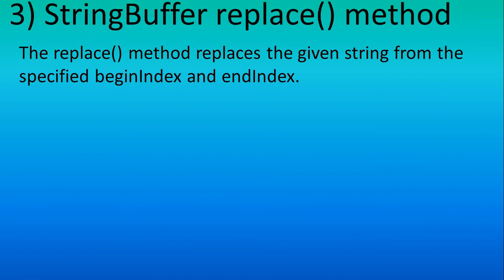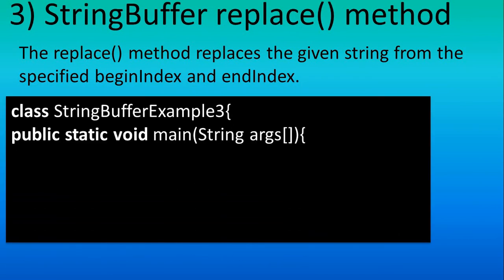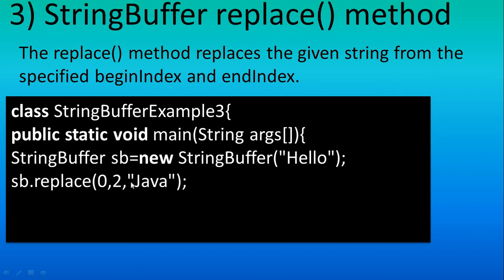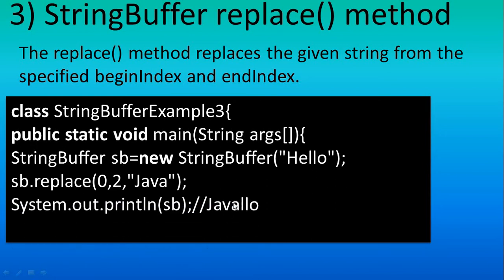Next is the StringBuffer replace() method. Here our string value is 'Hello' and we are replacing it with a new value. At position 0, in place of the first two characters, we want 'Java'. Position 0 means 'h' and the value 2 means the number of characters — 'h' and 'e' — to replace. So the output will be 'Java' followed by 'llo'. The first argument is the starting index position and the second is the number of characters to be replaced.